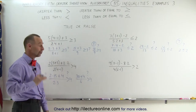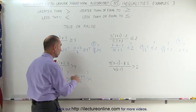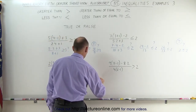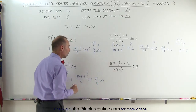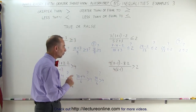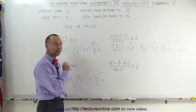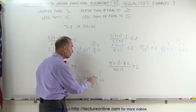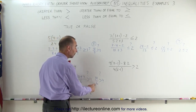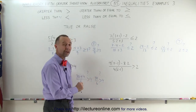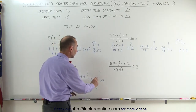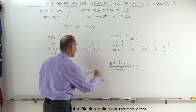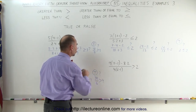Continuing on, 30 plus 4 is 34 divided by 6. Is that greater than 4? I know that 34 divided by 6 must be greater than 4 because 30 divided by 6 is 5, and 34 divided by 6 must be greater than 5. Therefore this is greater than 4, which makes this a true statement.